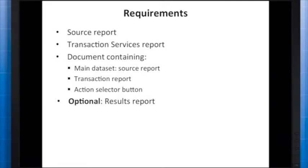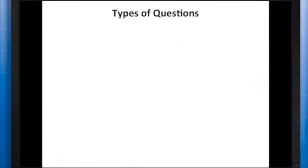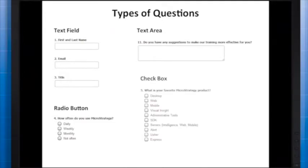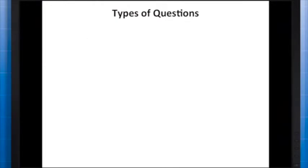Lastly, you can create a results report or document to display after the user submits the survey; this last step is optional and will not be covered in this video. Now let's take a look at the different types of questions you can have in a survey. You can have a text field consisting of one line where you can enter text, a text area consisting of a field where you can enter multiple lines of text, a radio button where you can select one button at a time, and a check box where you can select more than one box at a time.